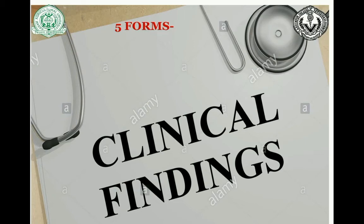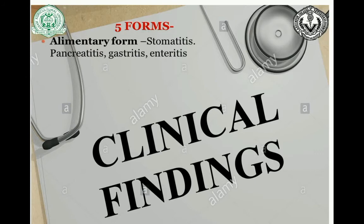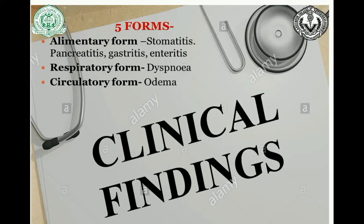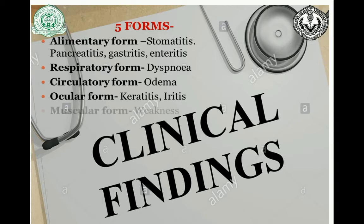Coming to the clinical findings, there are five main forms of the disease. The first is the alimentary form, characterized by stomatitis, pancreatitis, gastritis, and enteritis. The second is the respiratory form, which causes respiratory distress. The third is the circulatory form, causing edema. The fourth is the ocular form, characterized by keratitis, iritis, etc. And the last is the muscular form, which causes muscular weakness.